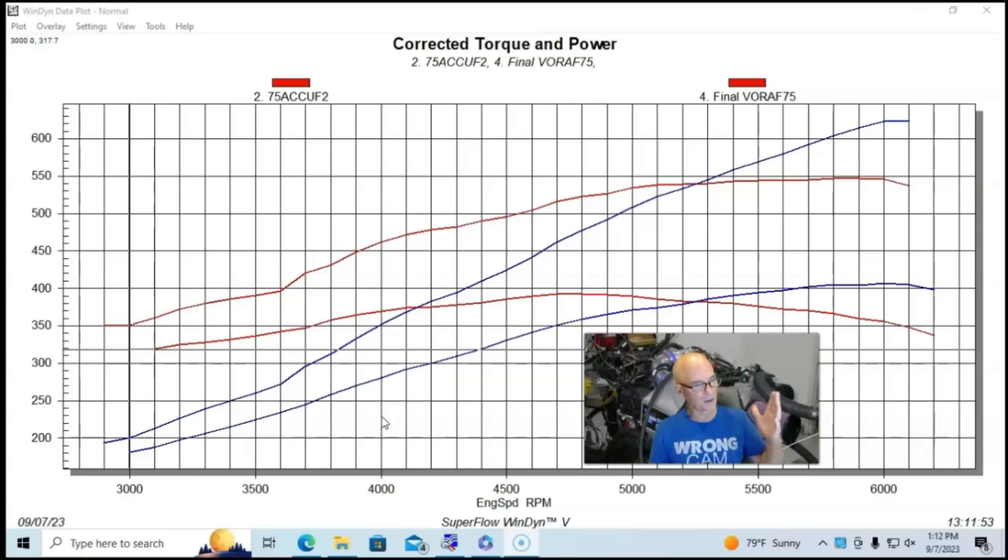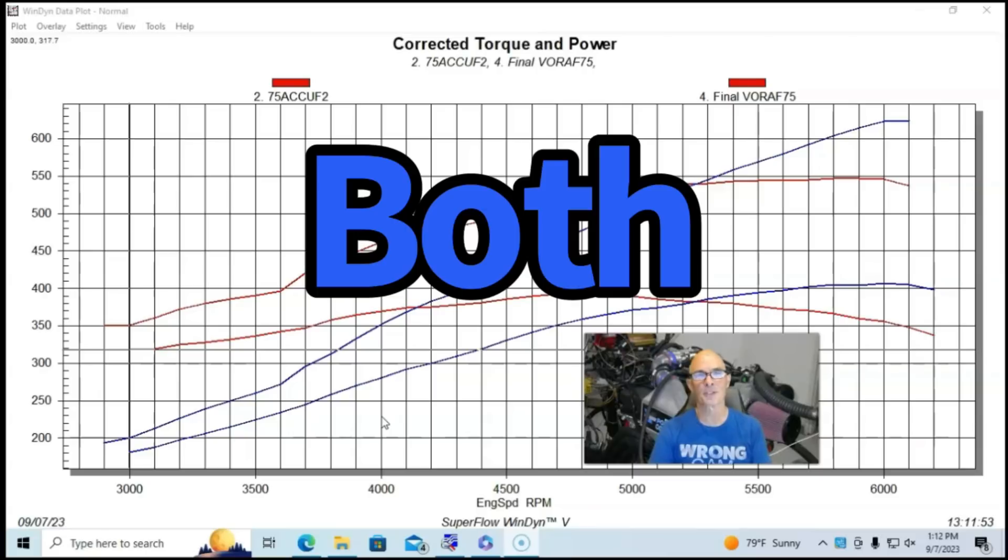And the kit included a Vortec V3 SI trim supercharger, which certainly had more power to give on this combination. But there you have it. This is what happens when you combine the good NA motor with boost instead of having to choose one or the other. Obviously, the best choice is both.